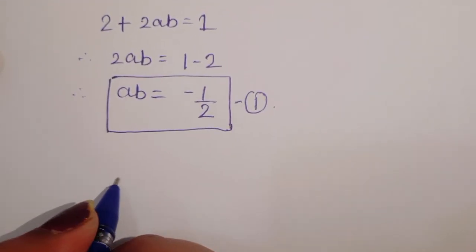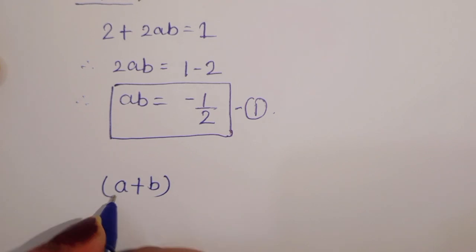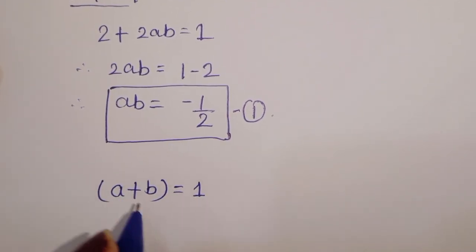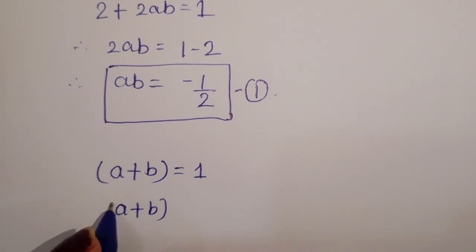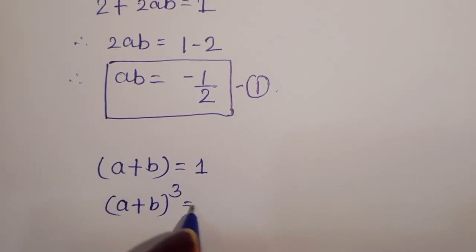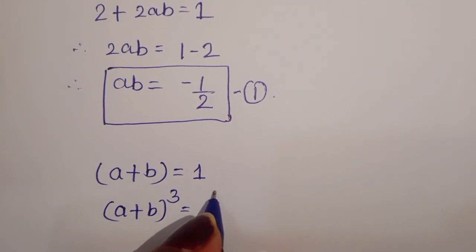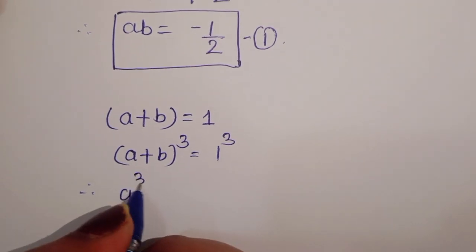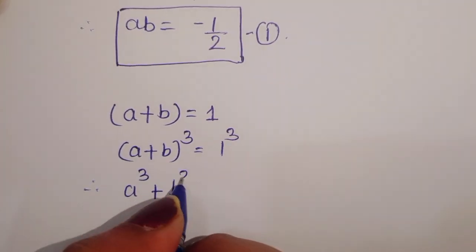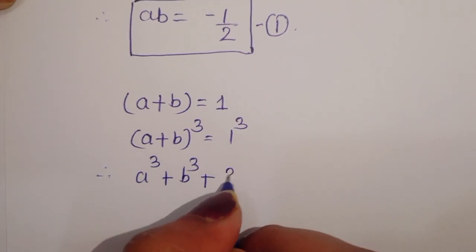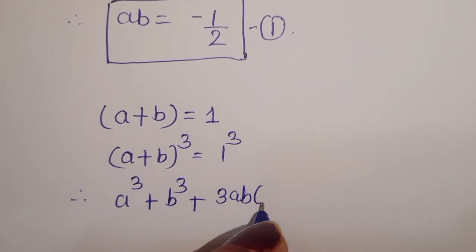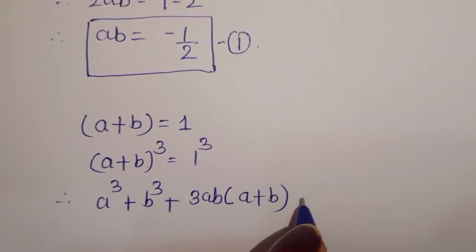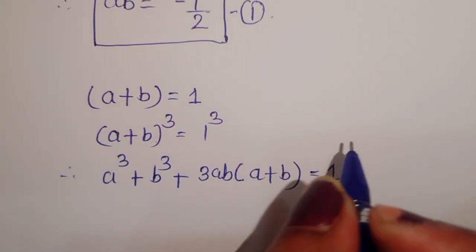Now, a plus b is equal to 1 (given). We can take the cube: (a plus b) cube is equal to 1 cube, therefore a cube plus b cube plus 3ab into (a plus b) — this is the formula of (a plus b) cube — is equal to 1.